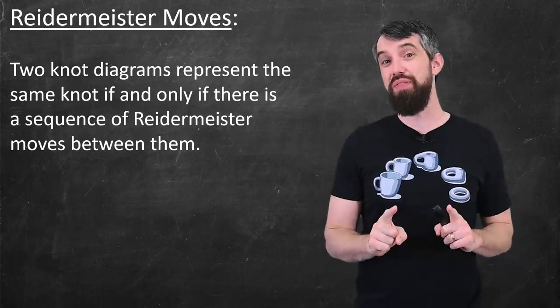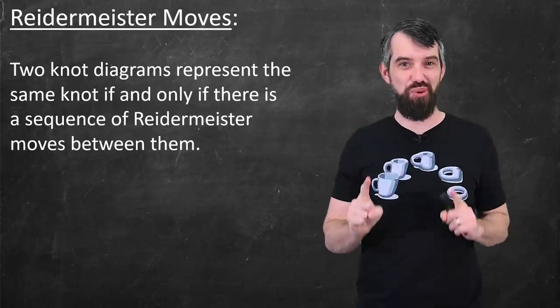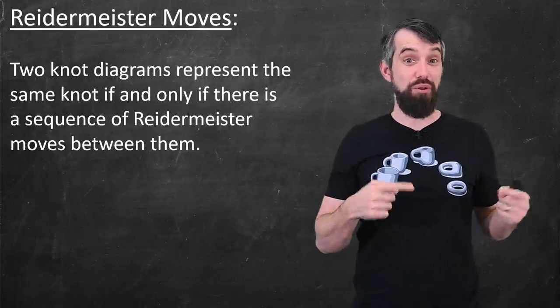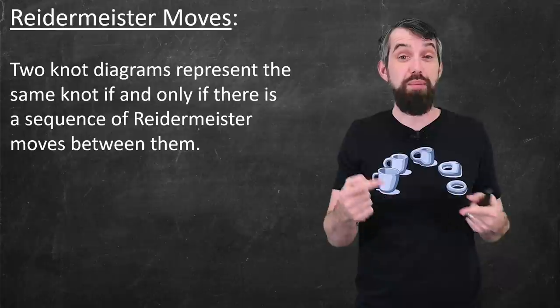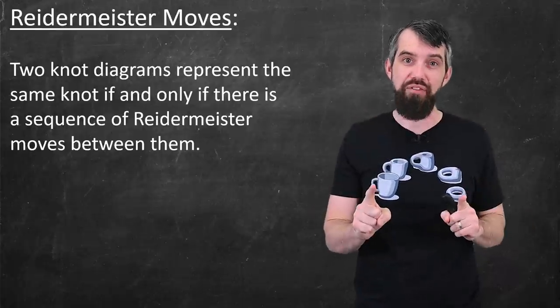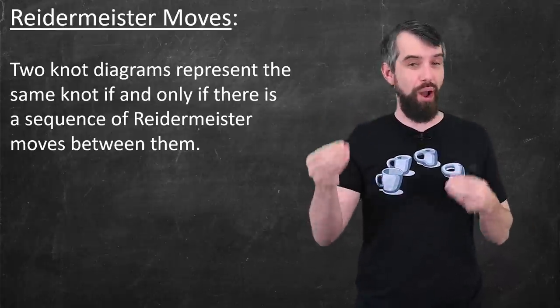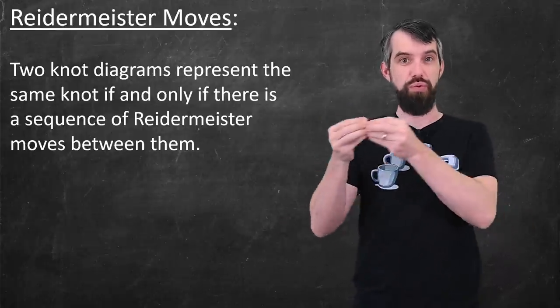And it turns out that I only need these three Reidemeister moves. That is, there is a theorem that says two different knot diagrams both represent the same knot if and only if there is a sequence of Reidemeister moves that goes from the one to the other.